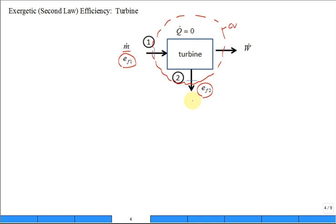If it's a turbine, which one is larger? The flow exergy in is larger, isn't it? Because it's producing useful work. So some of that exergy is coming out of the fluid stream and is going into the work, this power out.